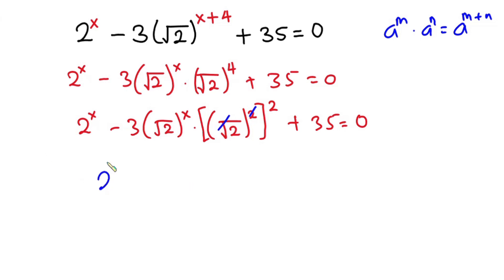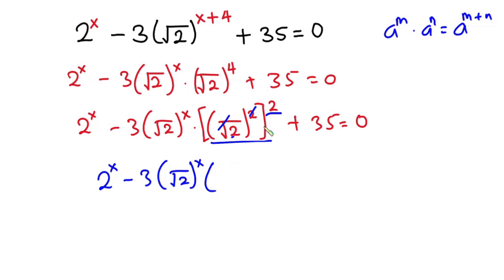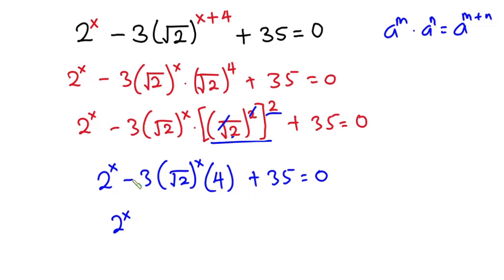Now we have 2 to the power x, minus 3, into the square root of 2 to the power x. From here, 2 to the power 2 is 4, so we have negative 3 times 4, which gives negative 12. So we have 2 to the power x, minus 12, into the square root of 2 to the power x, plus 35, equal to 0.